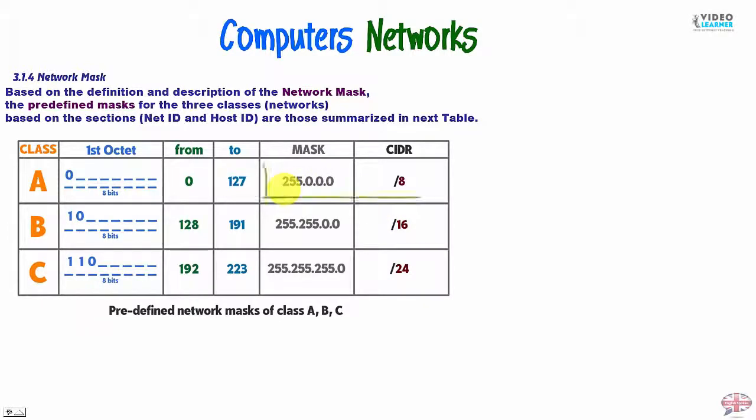So we have 255, this is the mask. We have 16 digits, so 8 and 8. We have 255.255.0.0. And class C, we have 24 digits, so we have 8, 8, 8 digits with Aces. So we have 255.255.255.0.